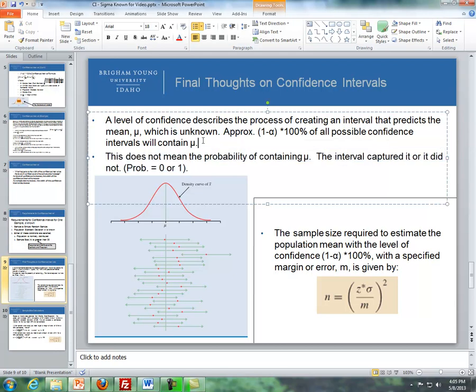Level of confidence deals with the process that if we do this many times, 95% of the time we'll approximately capture the true mean with a 95% confidence interval. But probability-wise, we either got it or we did not.